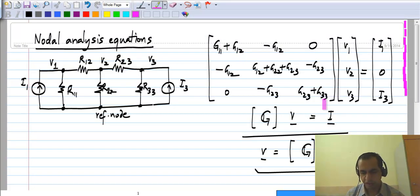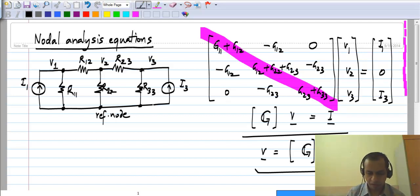First, let us focus on the diagonal elements of the matrix. What do you see? Let me remind you that the first row is for node 1, and the first column here corresponds to whatever is multiplying V1. If you look at the element A11 of the matrix, where I use the standard notation Aij corresponds to ith row and jth column.